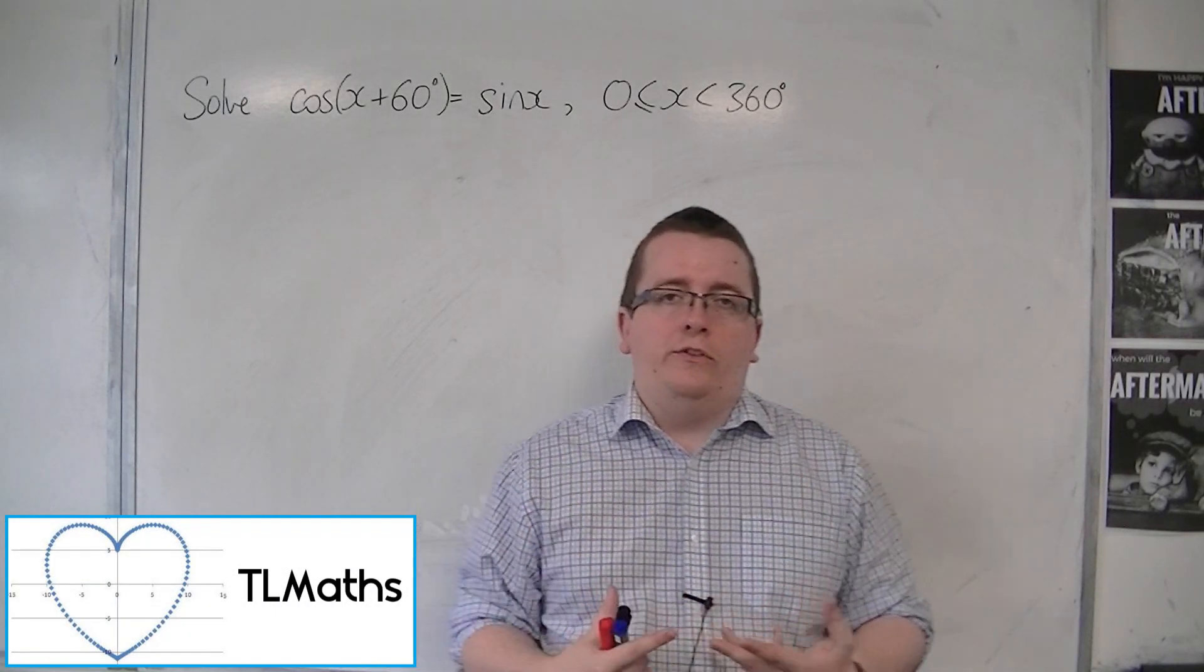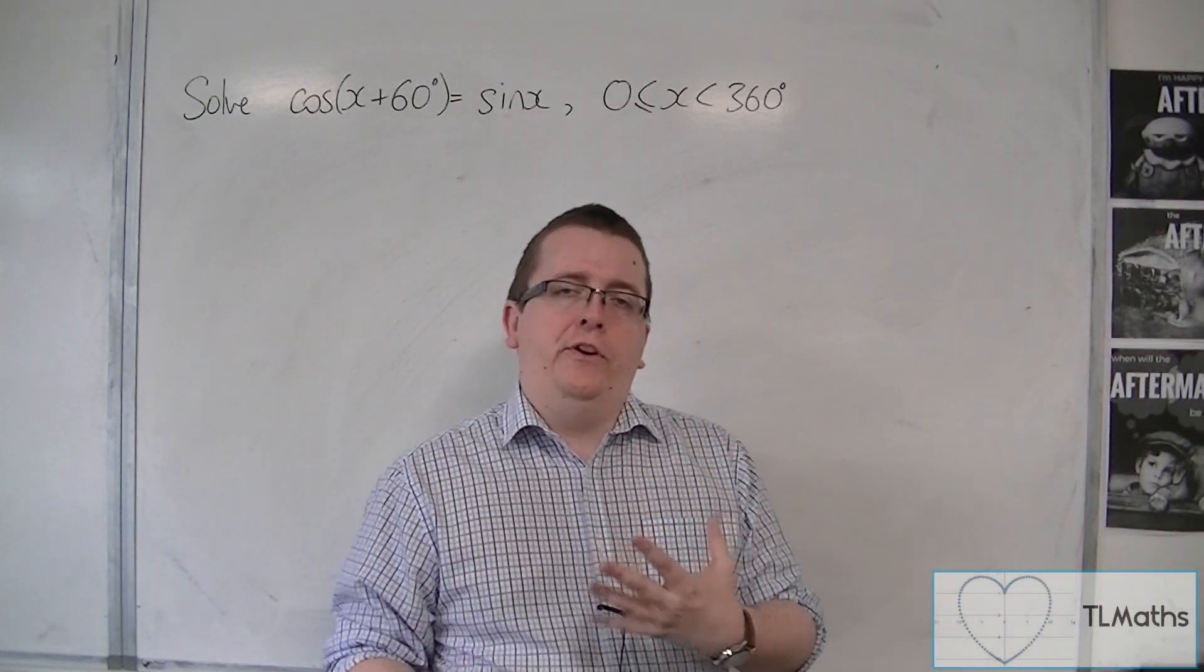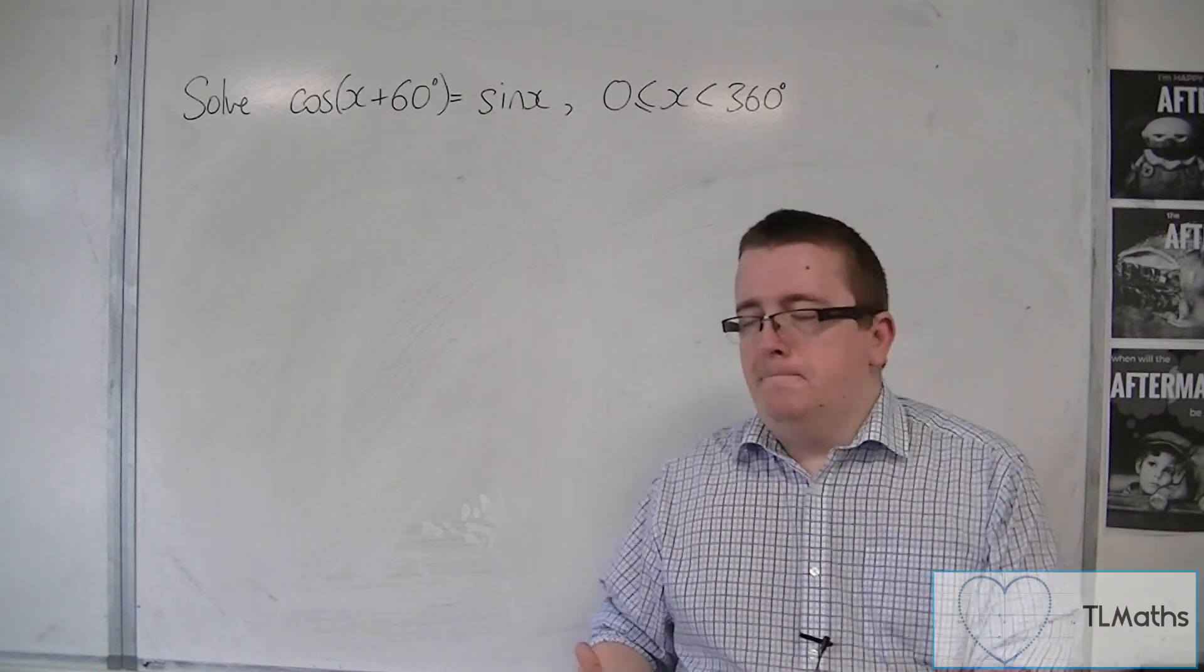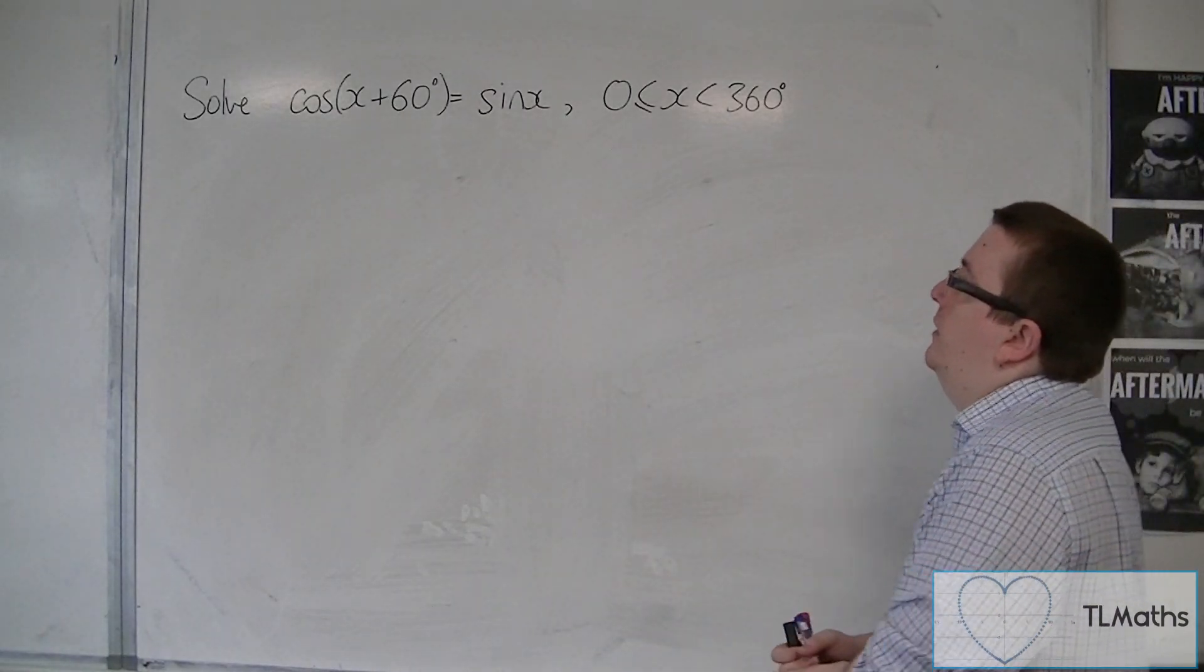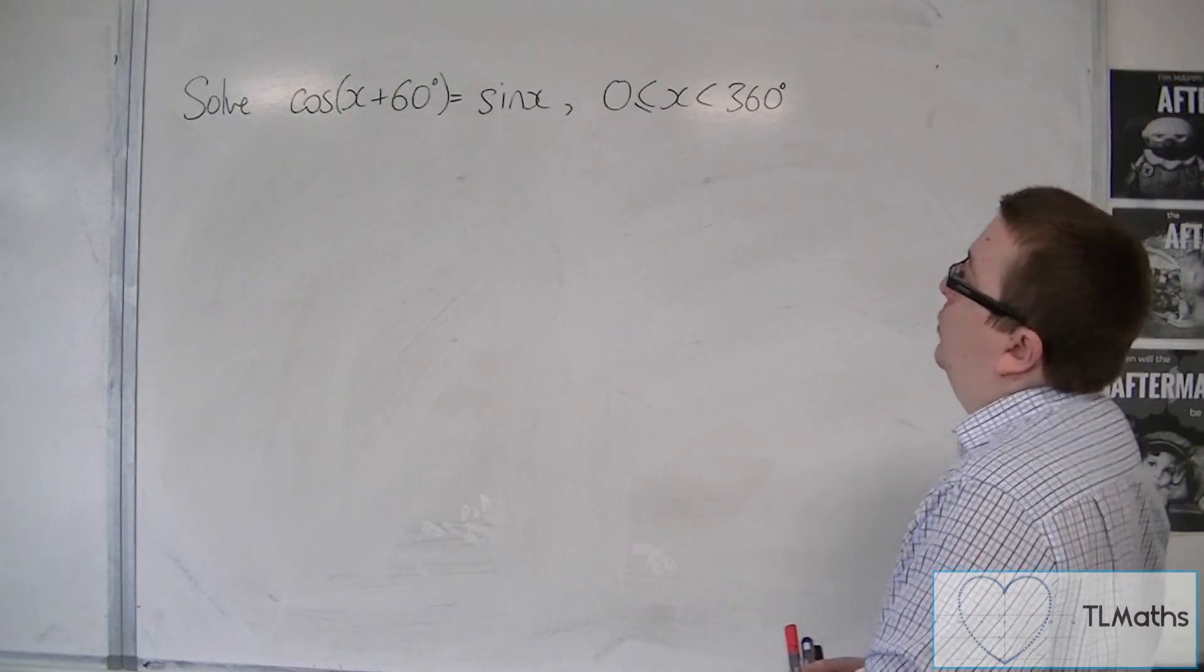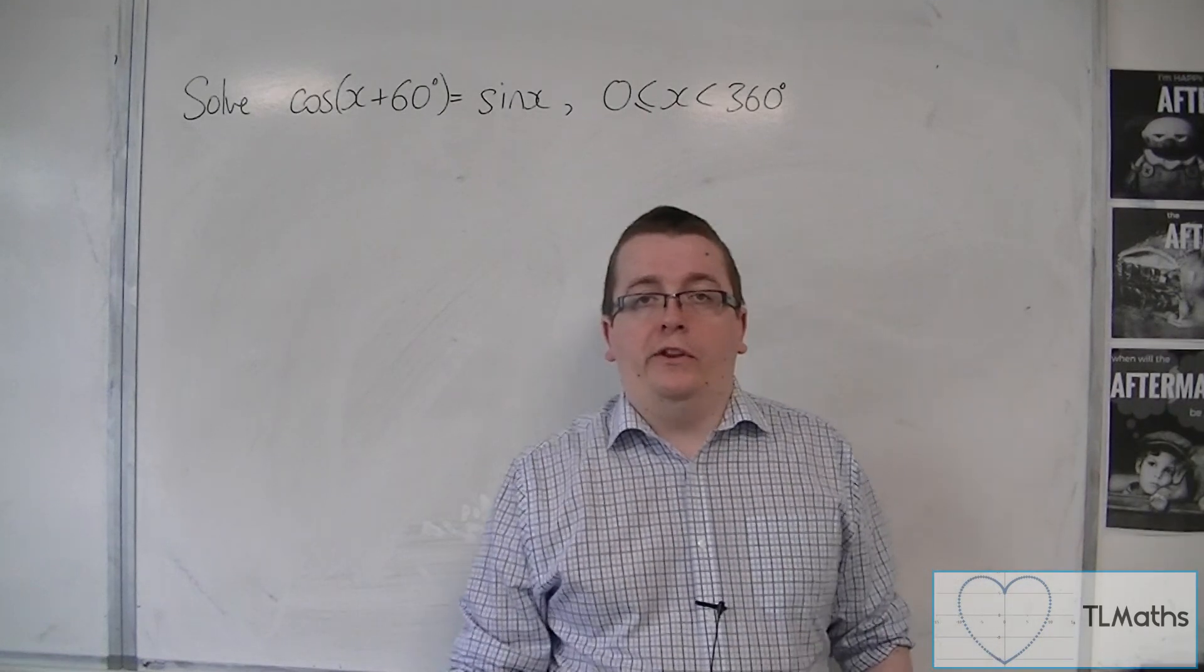Leading on from the previous video where we looked at how cosine and sine work graphically, we're going to try and solve cos(x+60°) = sin(x). We're going to solve it between 0 and 360 degrees.